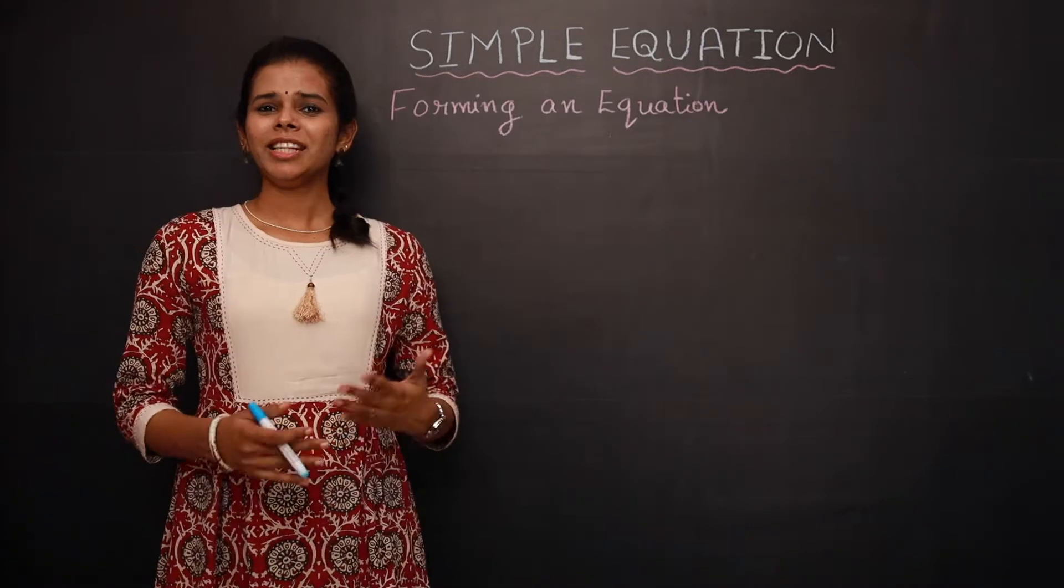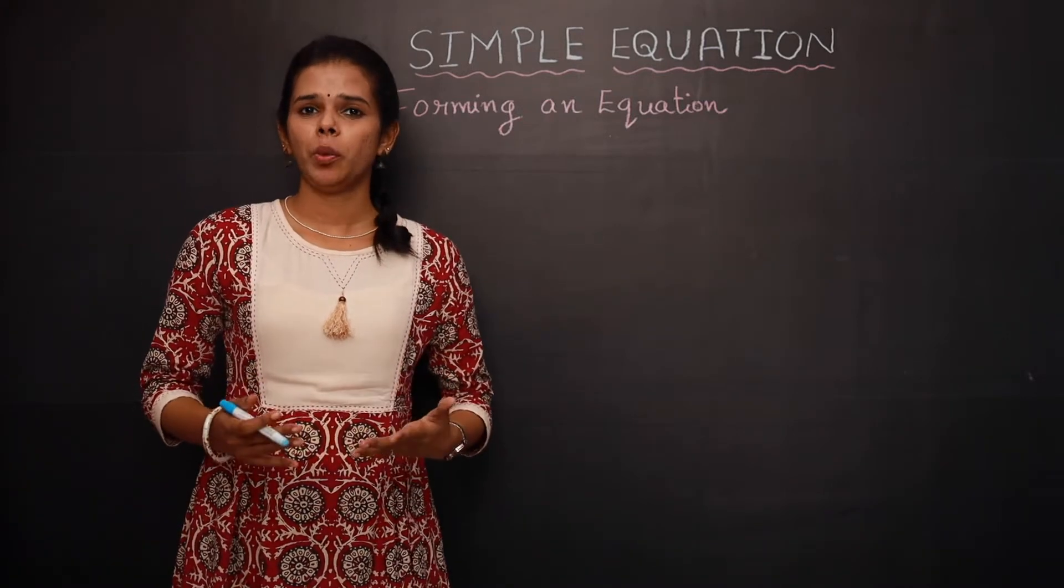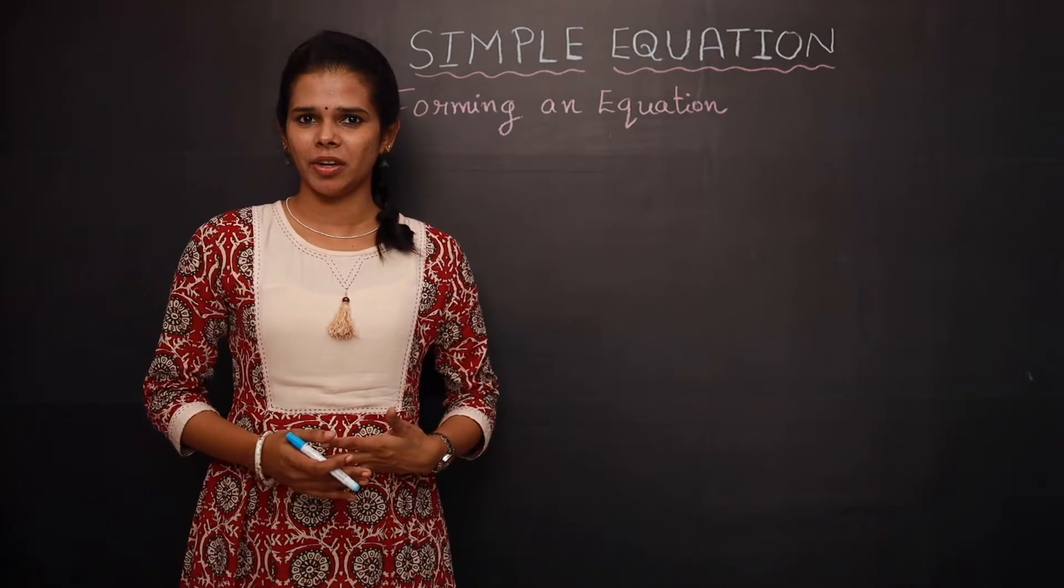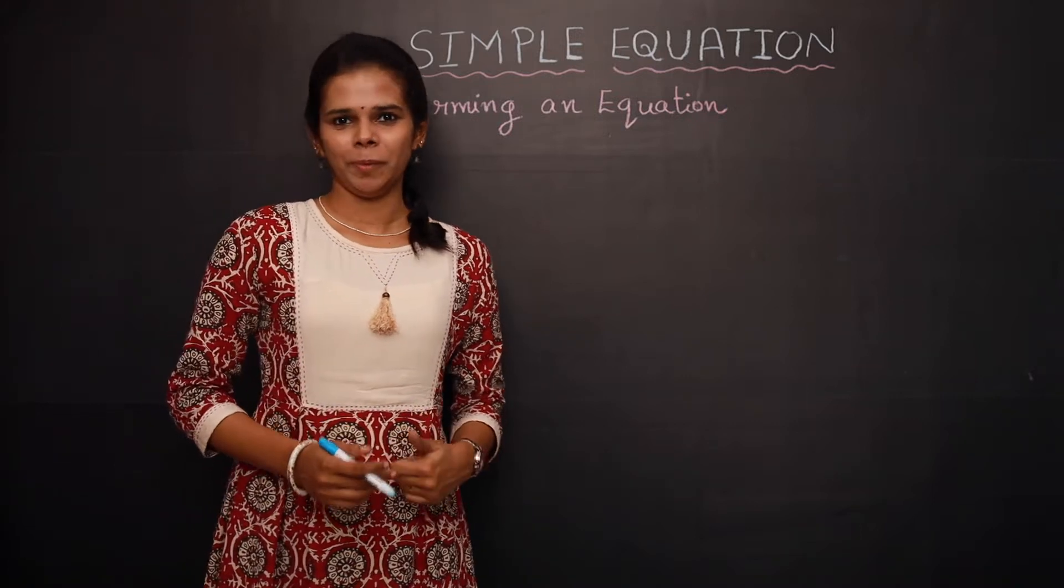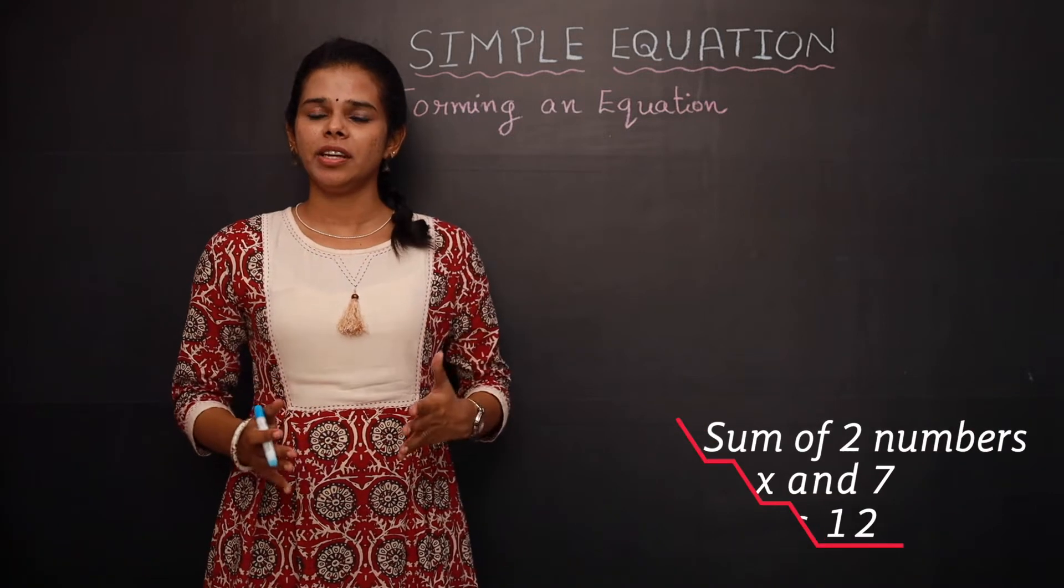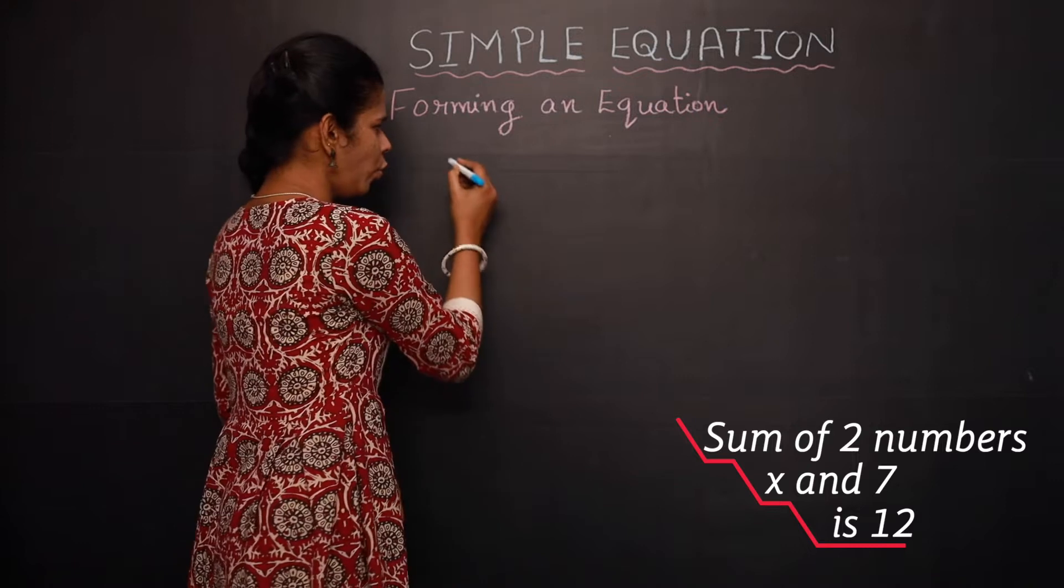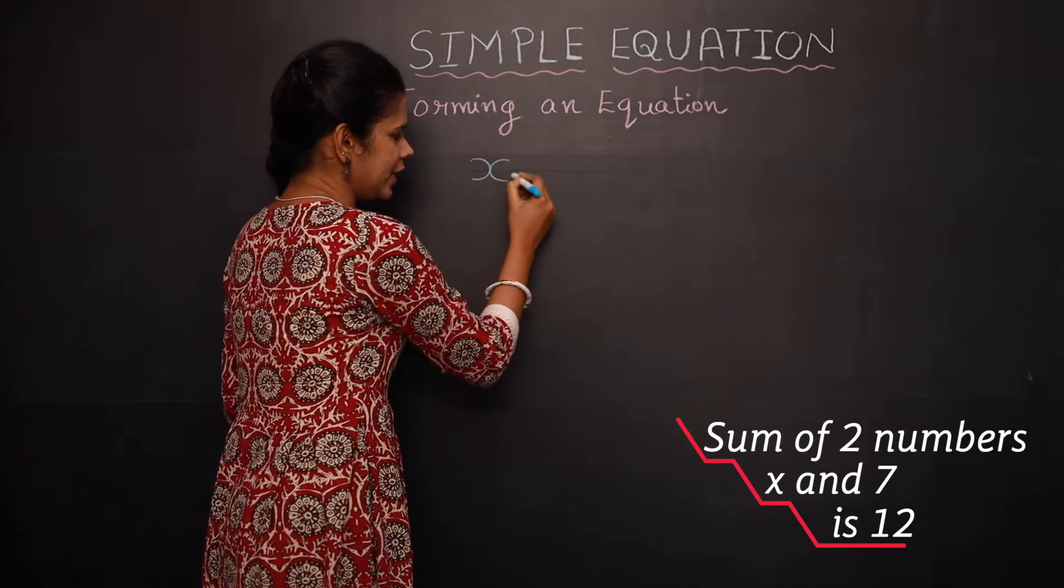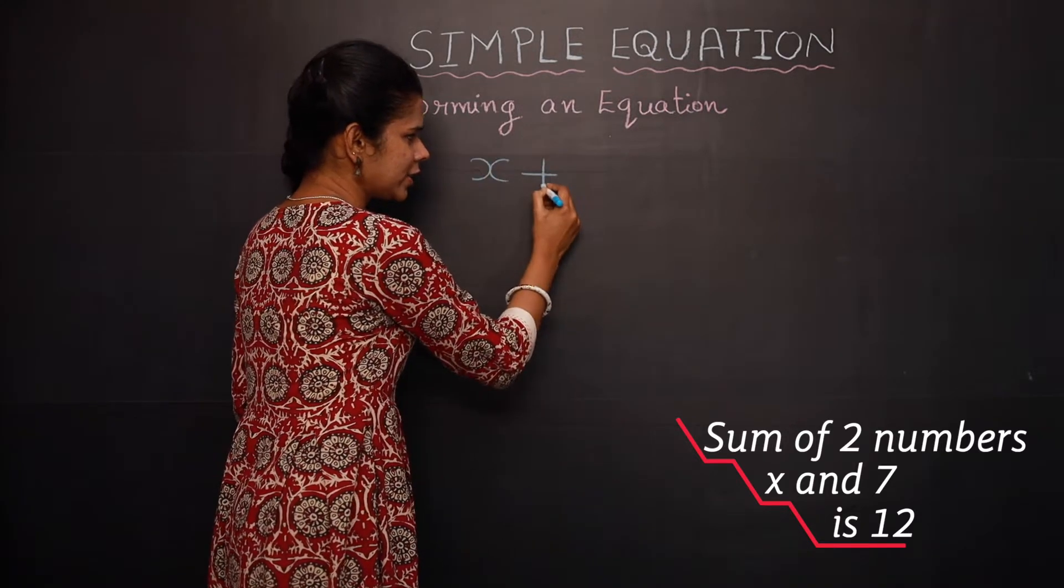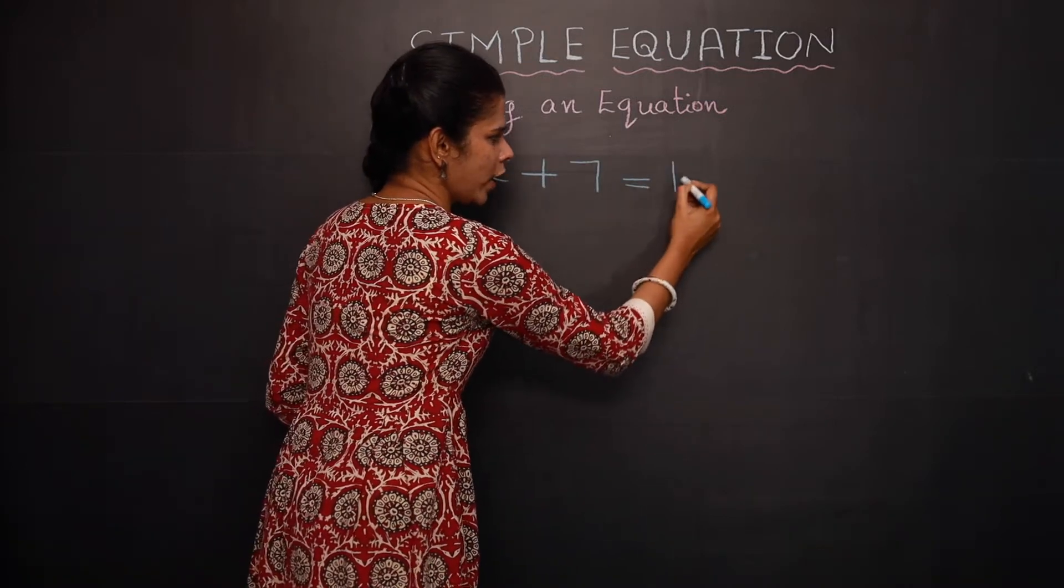The next topic is forming an equation. How do you form an equation when certain statements are given? Let's start with an example. If an equation is sum of two numbers x and 7 is 12, sum means it is addition, so it can be written as an equation like x plus 7 gives you 12.